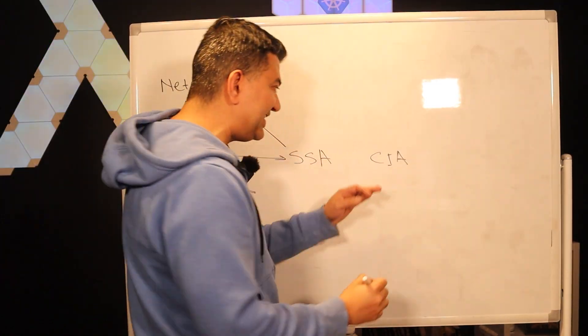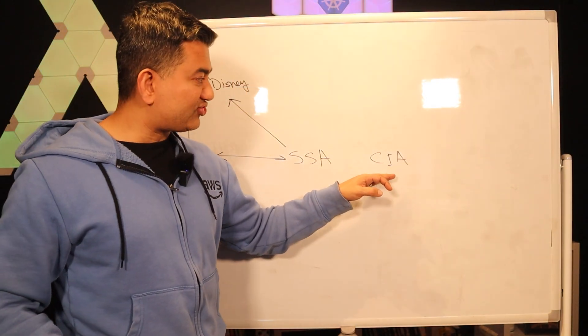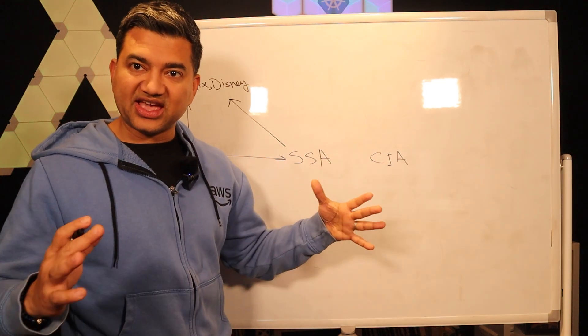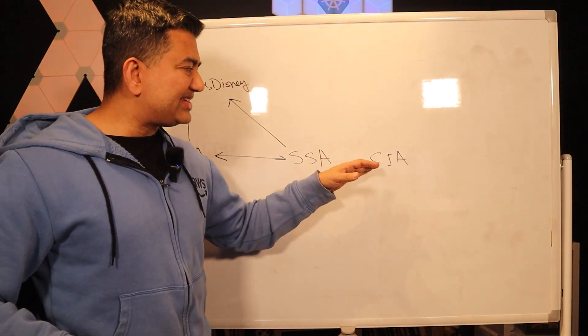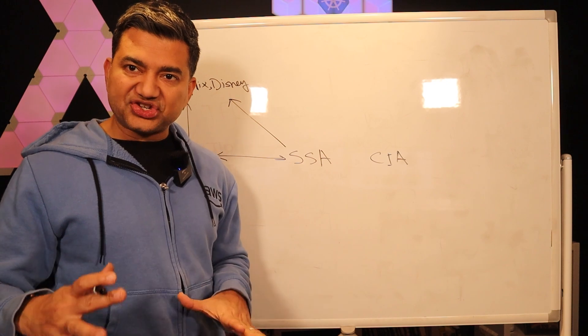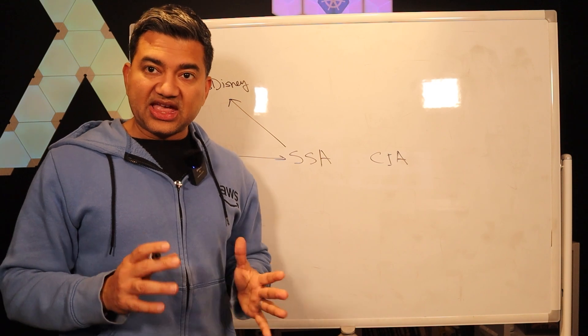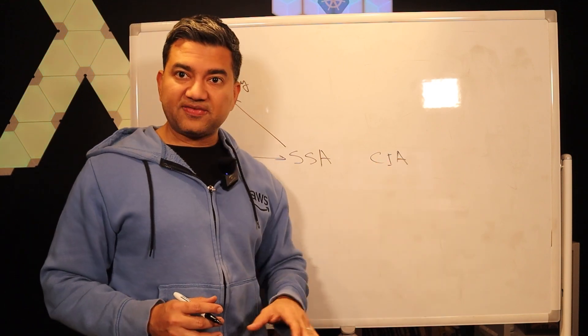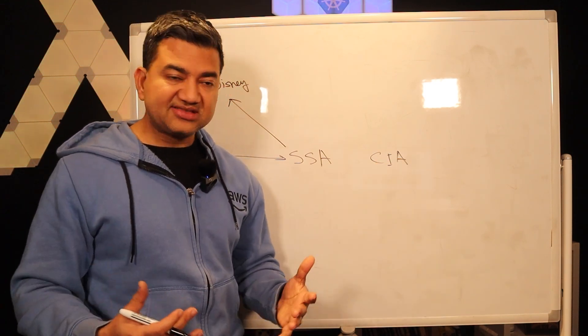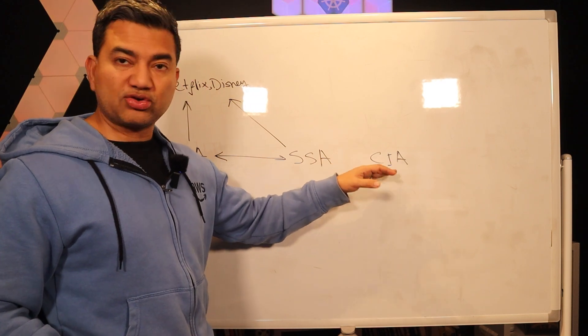What if customer wants AWS to come and code them the solution? So that's where CIA, or Cloud Infrastructure Architect, funny name right, CIA. Sometimes it's also called Cloud Application Architect. But when you search for the job and it shows ProServe, like professional services, then you know this is this role, like CIA.